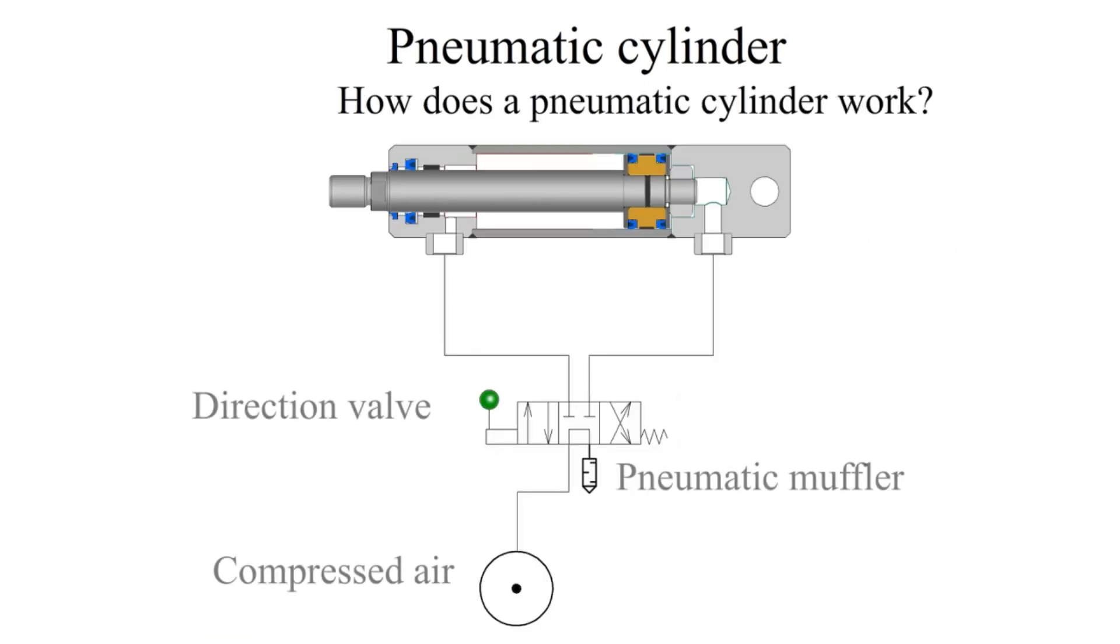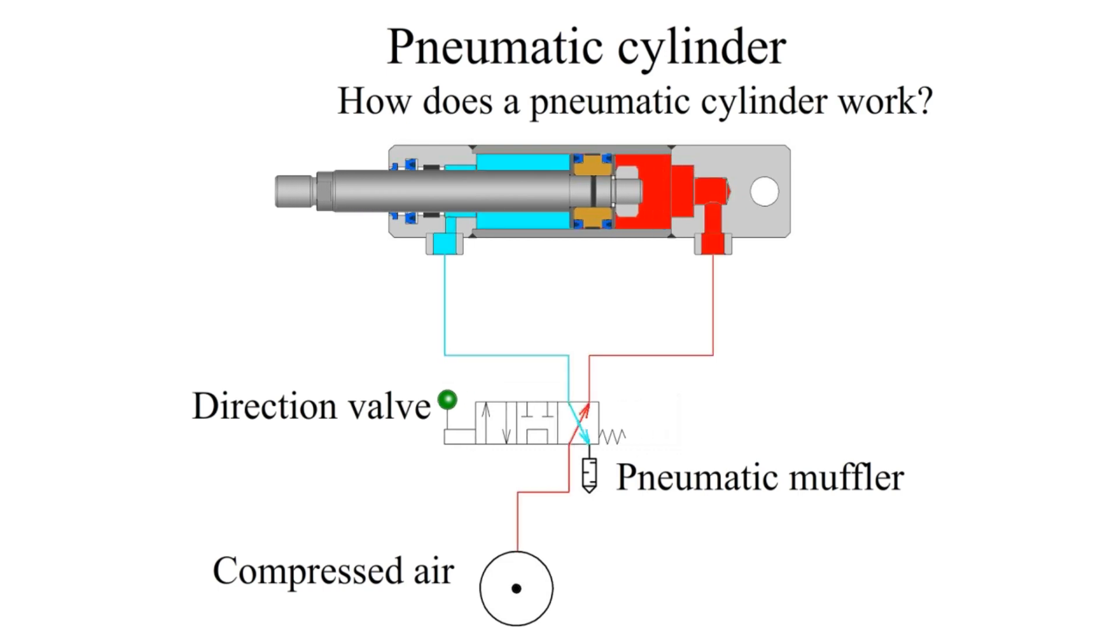How does a pneumatic cylinder work? Compressed air comes from the compressor. The directional valve directs compressed air into one of the cavities of the pneumatic cylinder. The piston moves and the rod extends.